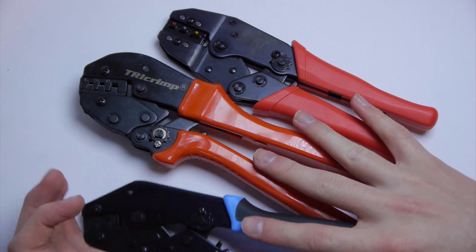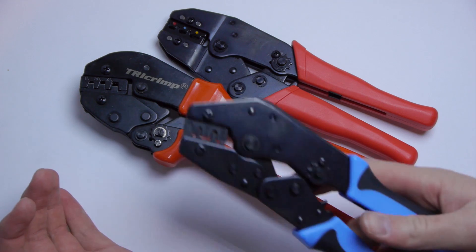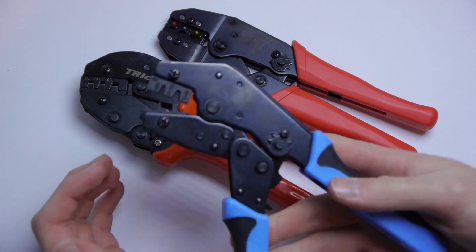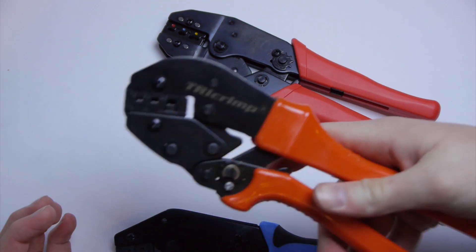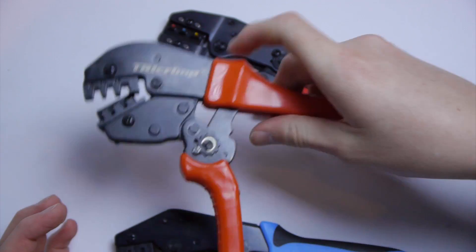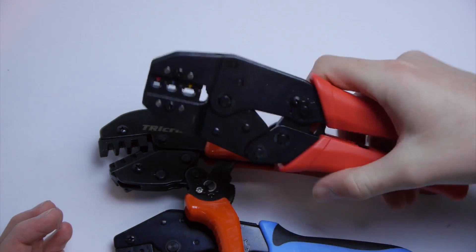These three different crimpers are for three different applications. This one is for making PWM wires. This one is for making power pole connectors. And this one is just for normal terminals.